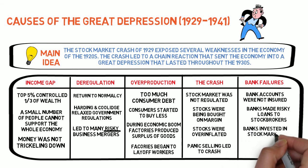All of these factors were tied together, and each one made the other worse. The economy of the nation went into a rapid downward spiral which lasted throughout the next decade.